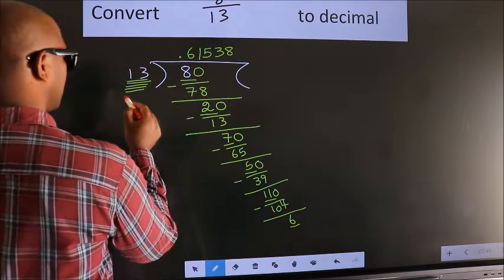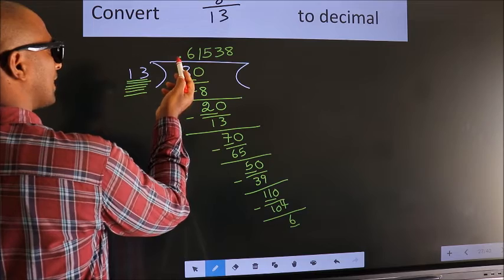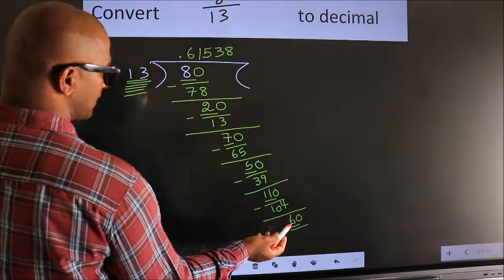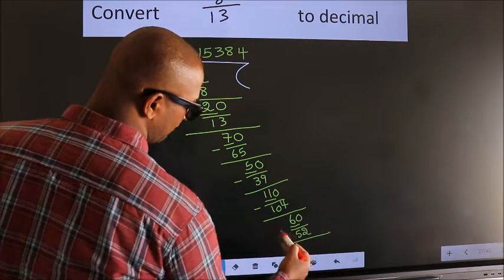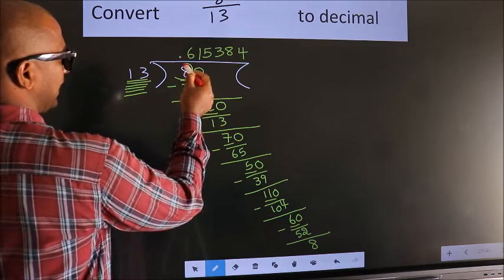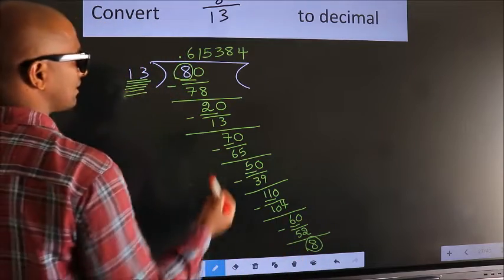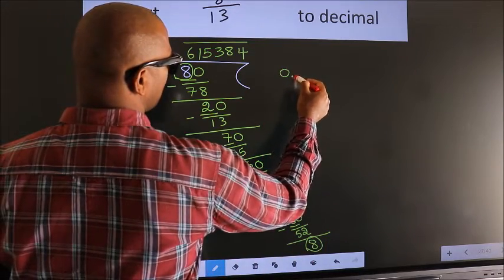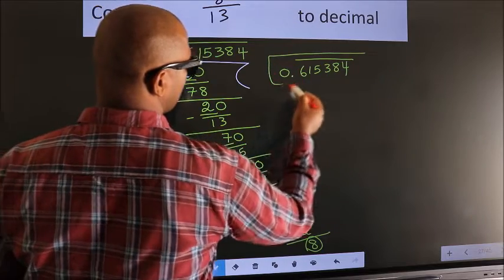Here we have 6, here 13. 6 is smaller than 13. And we already have the decimal, so we can directly take 0. So, 60. A number close to 60 in the 13 table is 13 fours, which is 52. Now, we subtract. We get 8. Here you observe — we had 8 here and we got 8 again. That means we get a bar on these numbers. Therefore, our answer is 0.615384 with a bar on these numbers. This is our answer.